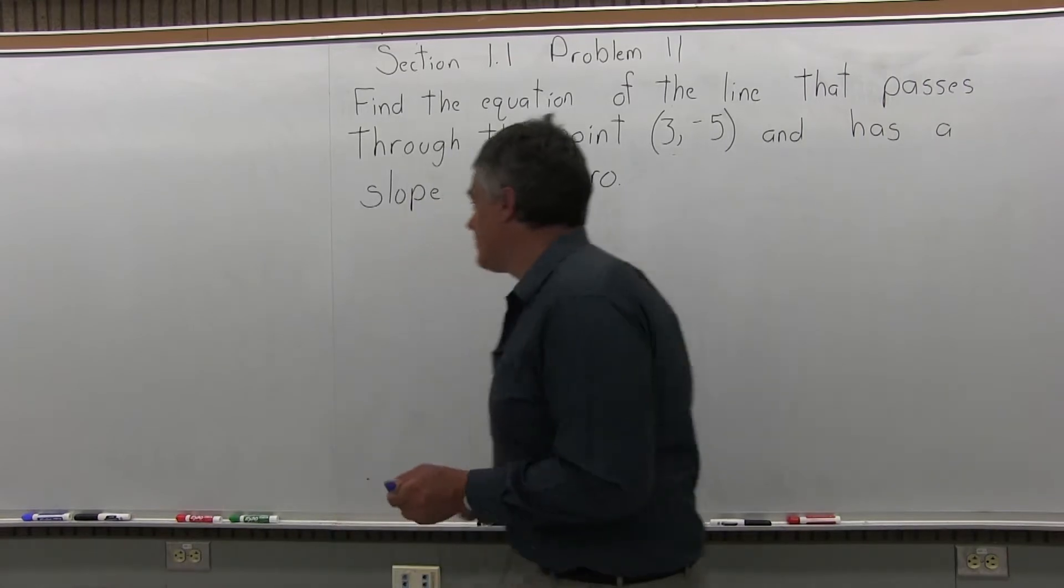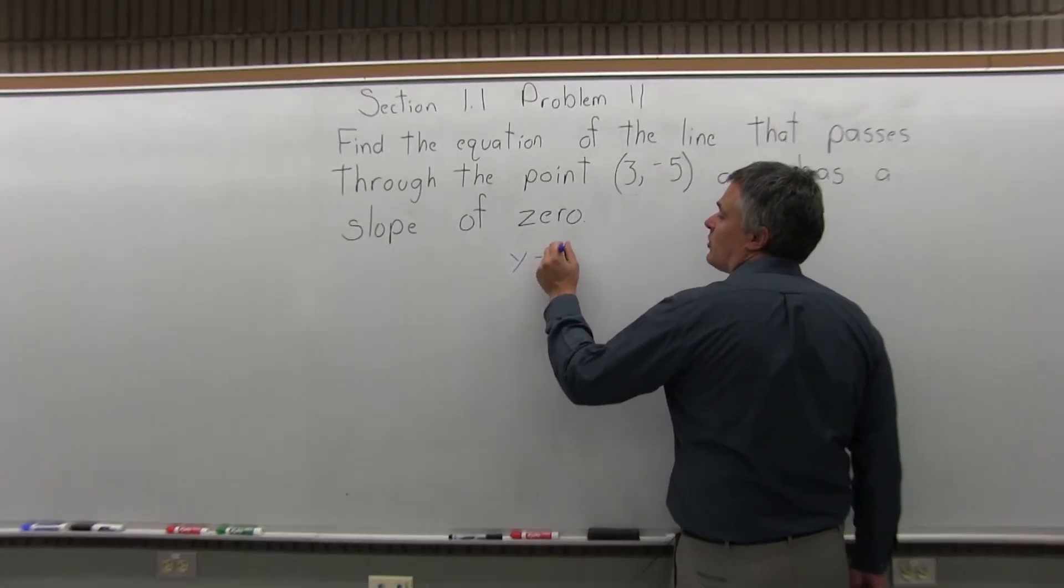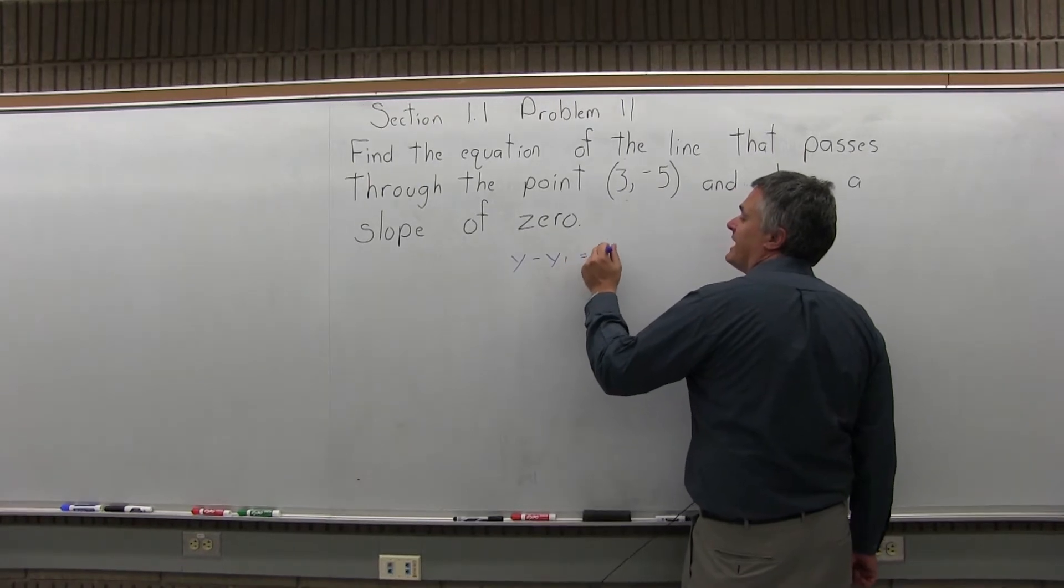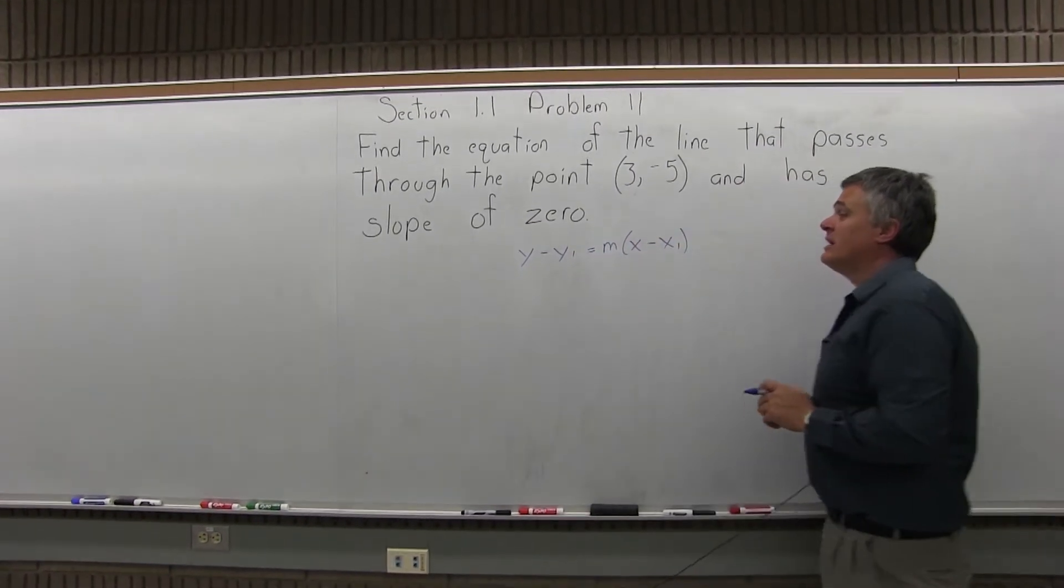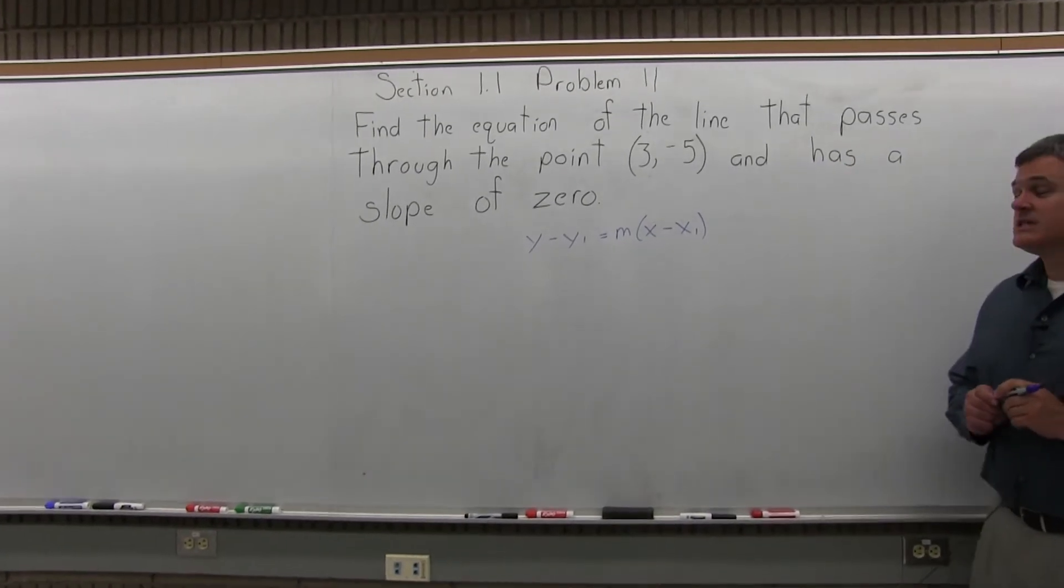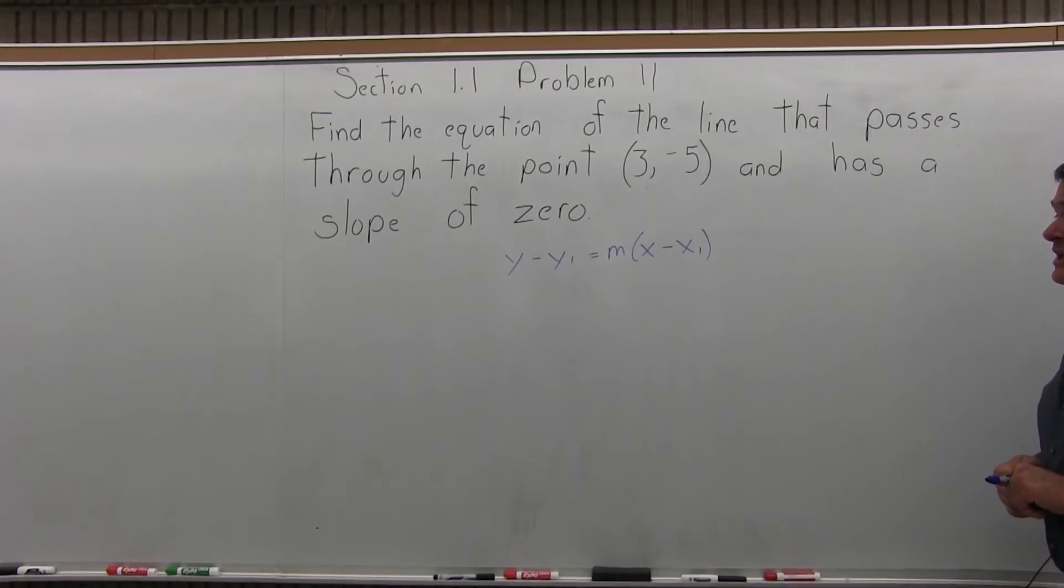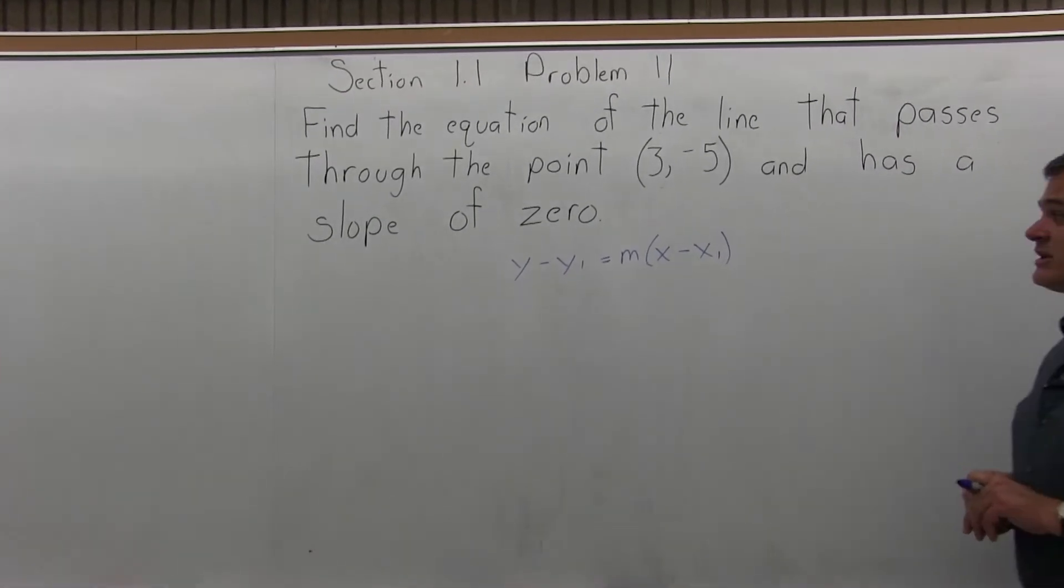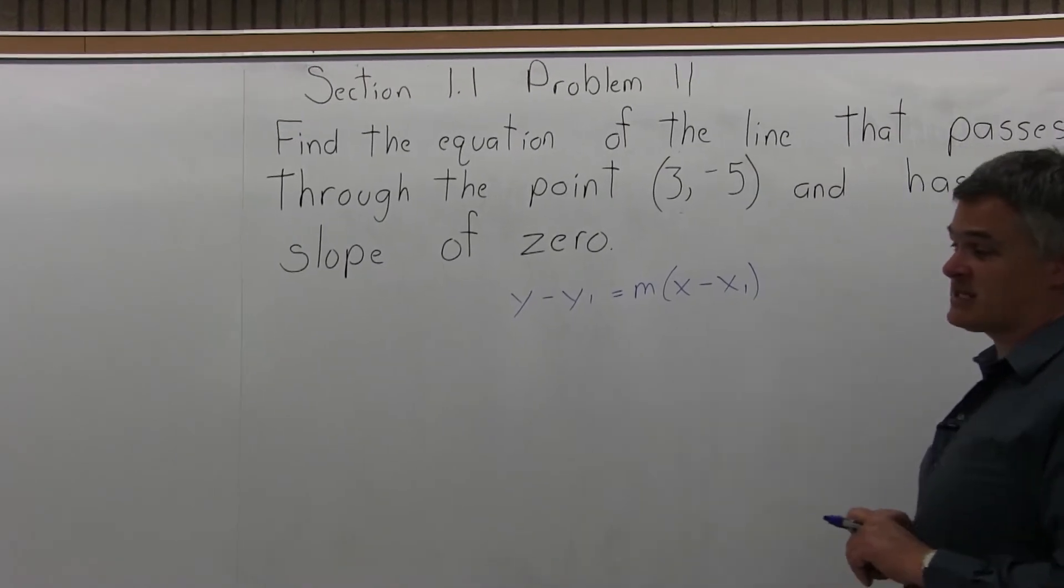When we find the equation of a line, typically we go with y minus y1 equals m times x minus x1. That will work fine for this and we have another method that we can do it and I'll show both for this. We can start with this one because this is typically how you start.